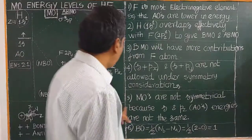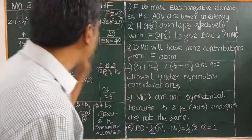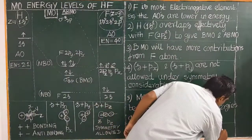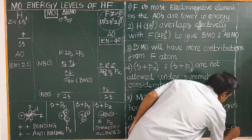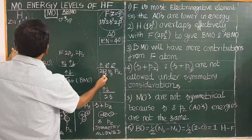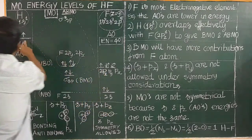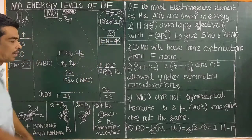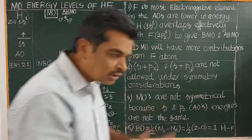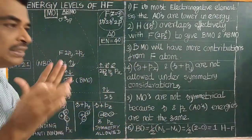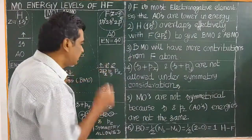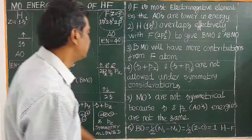The non-bonding character also arises because of the energy difference between the atomic orbitals. The two atomic orbitals that combine are not of similar energy, so the molecular orbitals formed are not perfectly symmetrical. Because of this energy difference, the resulting molecular orbitals are not equivalent, and the non-bonding orbitals remain essentially unchanged from the original atomic orbitals.